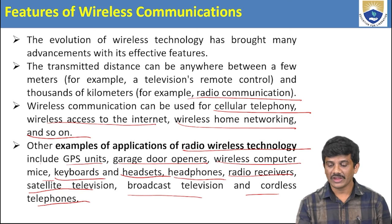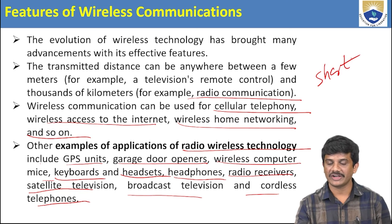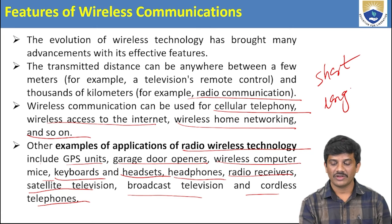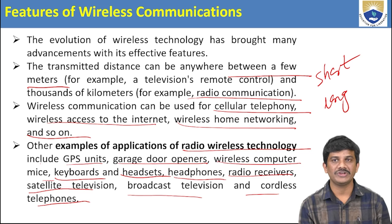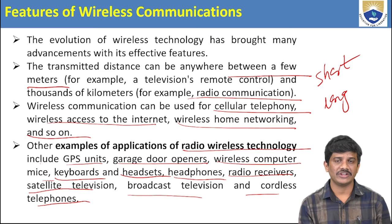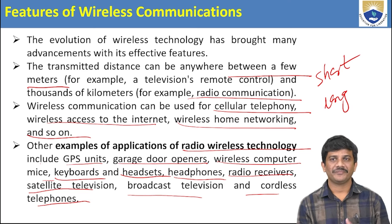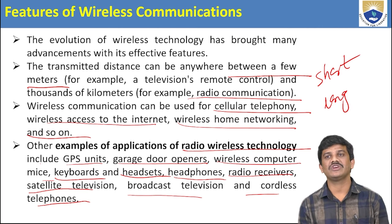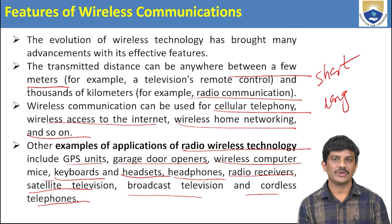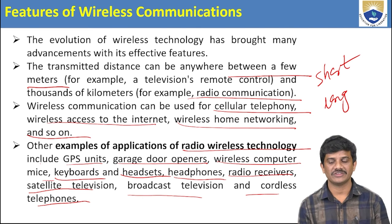For short distance, we can use a television remote — which is also a wireless device that operates within a few meters. For long distances of thousands of kilometers, we use radio communication. This covers both short-distance and long-distance wireless communication.